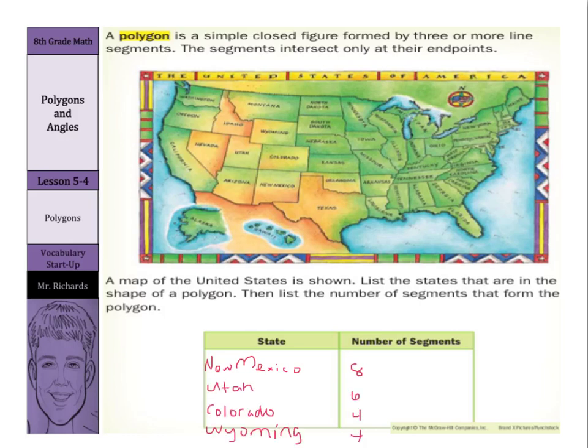Now there are a lot of states, and I just listed a couple more. We have Utah, and I counted six. Colorado has four, and Wyoming has four.